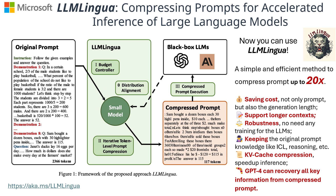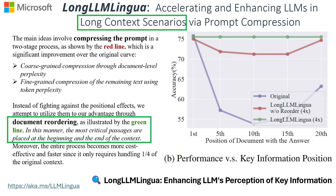LLM Lingua is basically a prompt compression technique to identify and remove non-essential tokens in prompts. Long LLM Lingua takes it a step further. In longer contexts, we often face this lost-in-the-middle problem, which basically means that data at the beginning or end of the prompt interferes with LLMs extracting key information. Long LLM Lingua does a smarter two-step compression of prompts by reordering the document to put critical parts first.